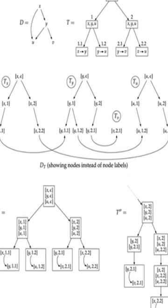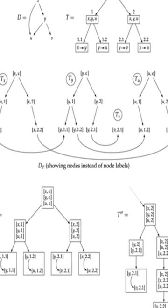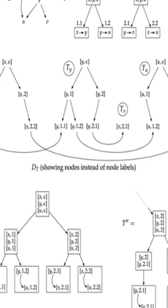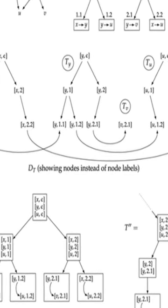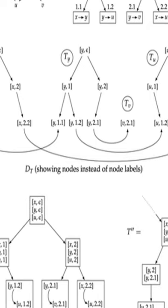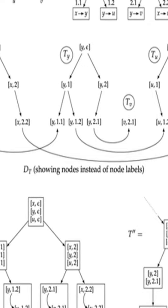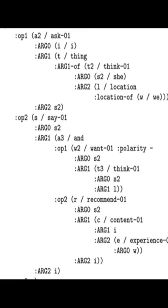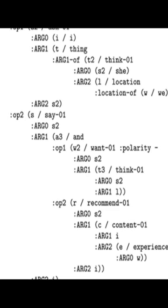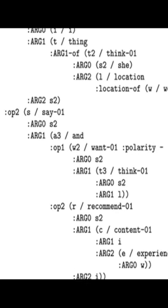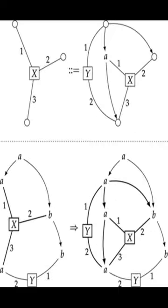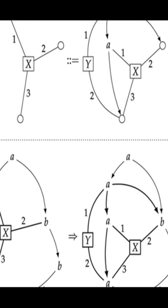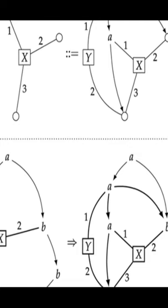This paper proposes a new approach to modeling and analyzing natural language data based on directed acyclic graph (DAG) automata. The authors demonstrate how to recognize patterns in these automata and use them for inference and learning. They also extend their work to graphs with unbounded node degree, showing that their results apply to this more general setting. This paper provides a valuable contribution to the field of natural language processing and its applications.